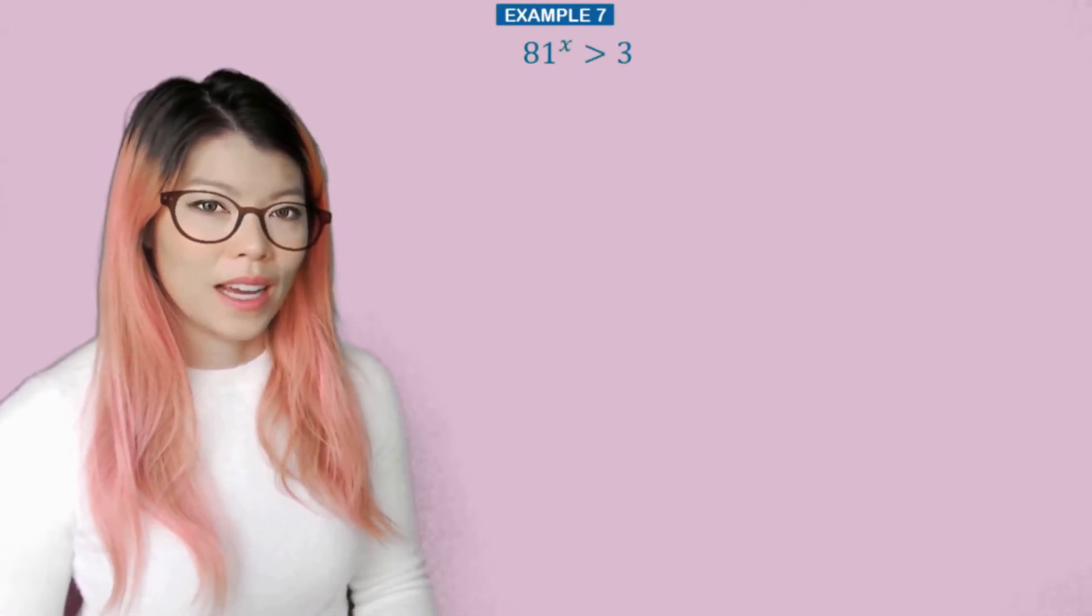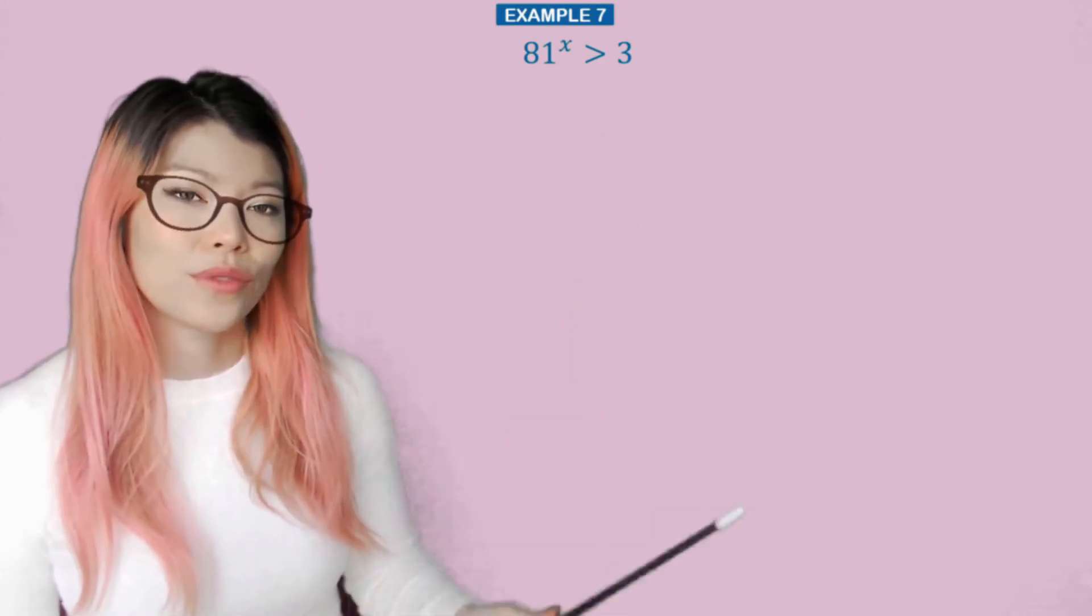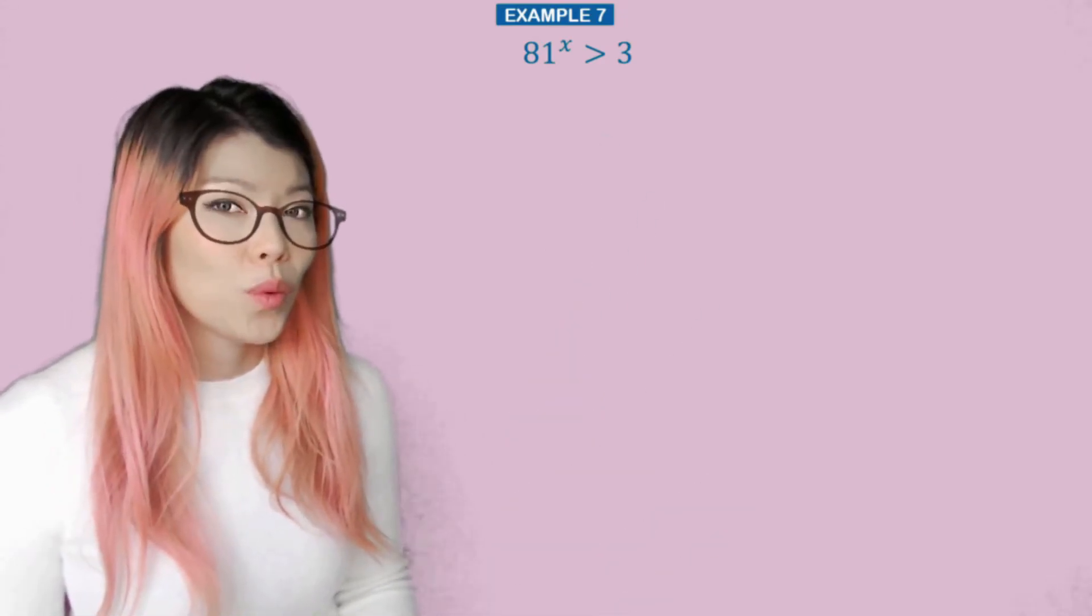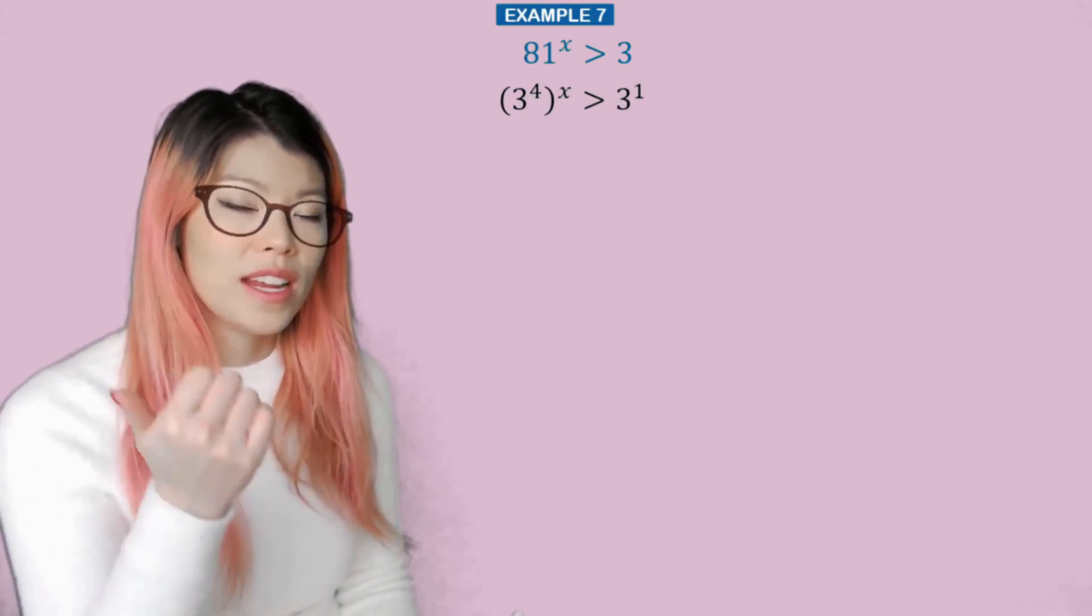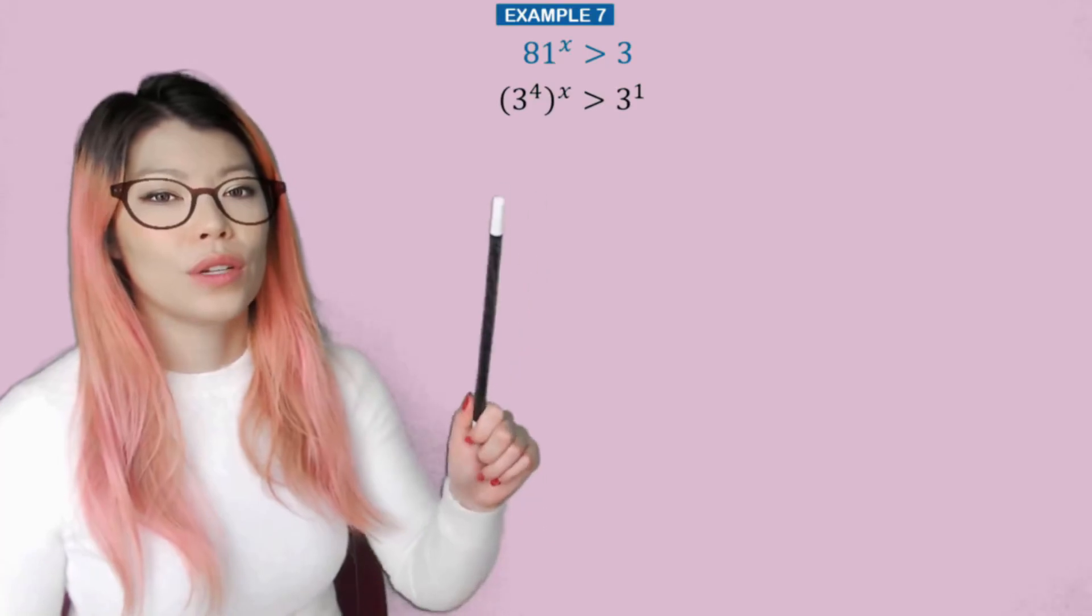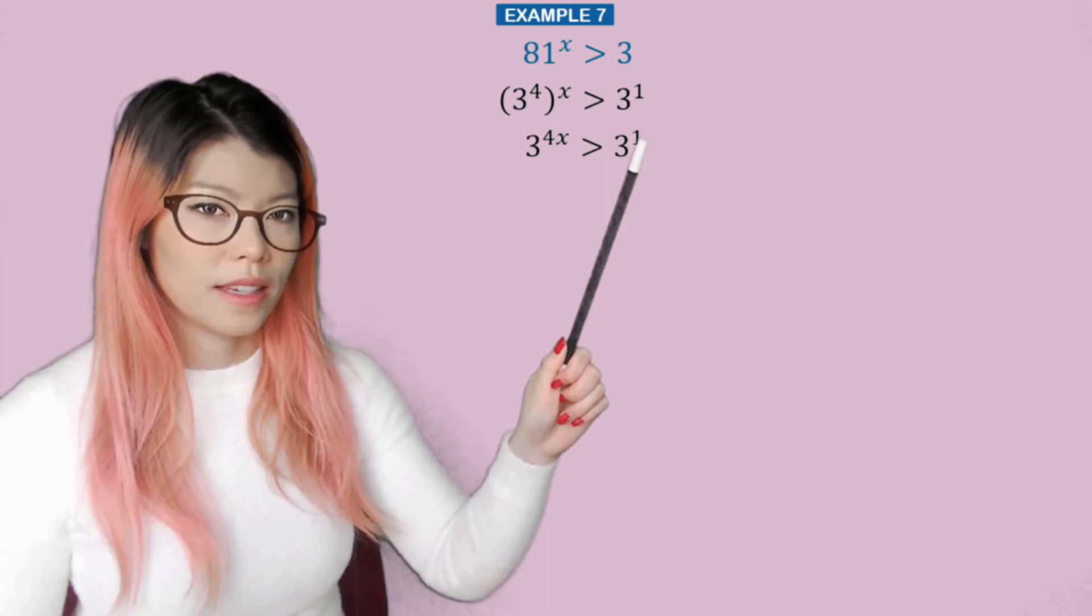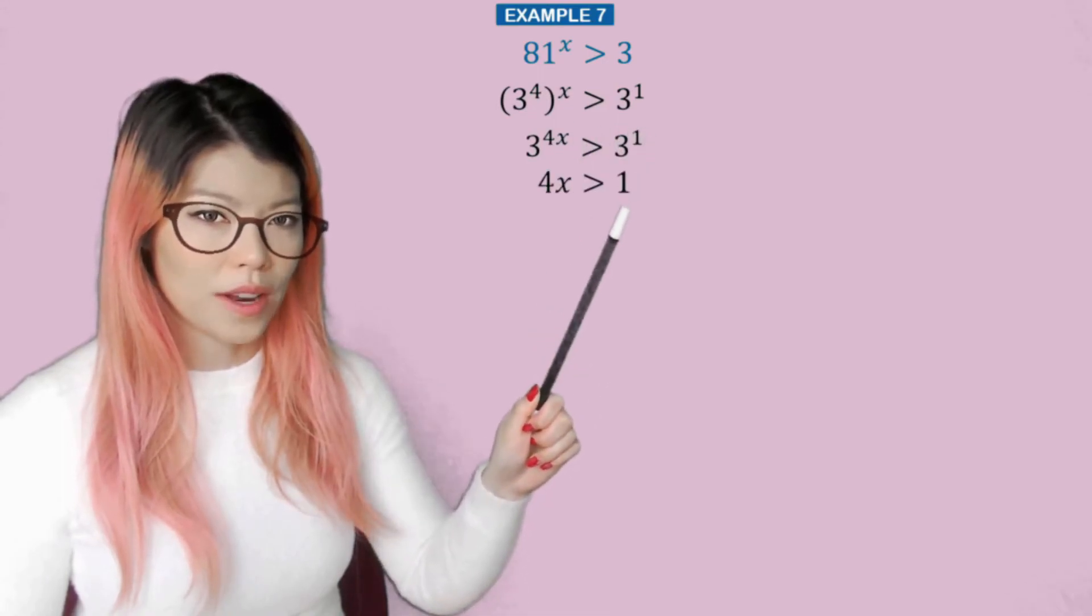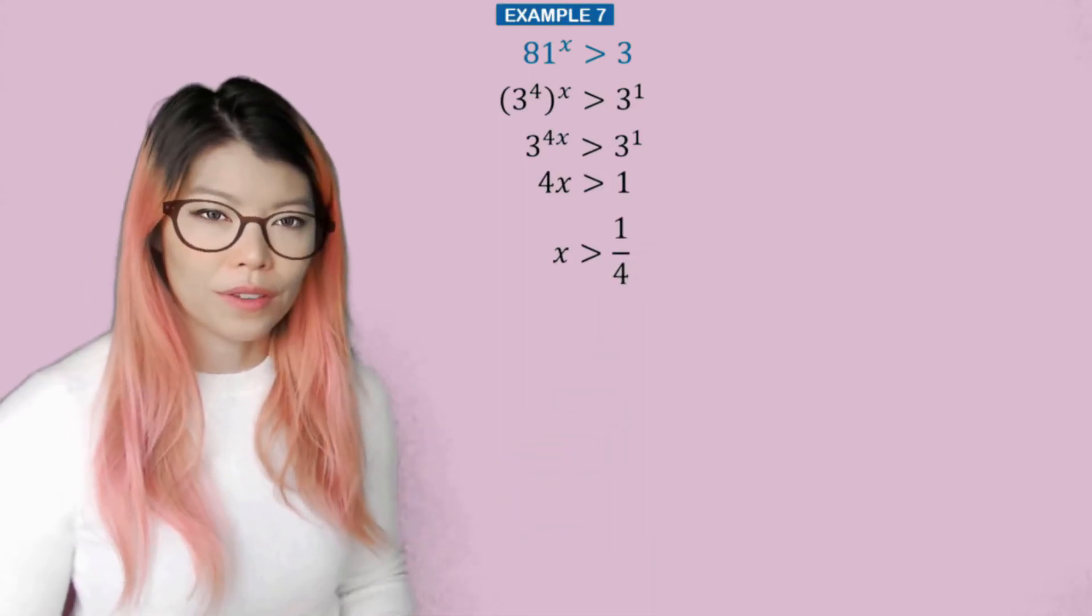Example 7, inequalities. What about when 81^x is greater than 3? Well, 81 can be written as 3 to the 4. Double check: 3, 9, 27, 81. So 3 to the 4, x equals 3 to the 1. So 4x is greater than 1. So now we have x is greater than 1 over 4.